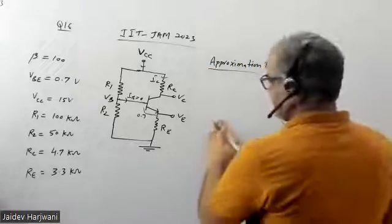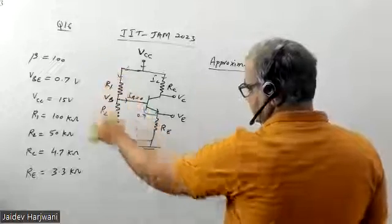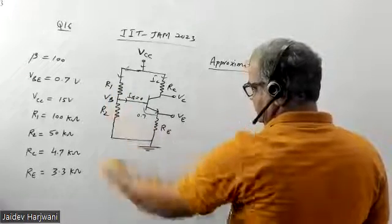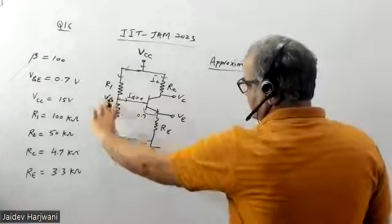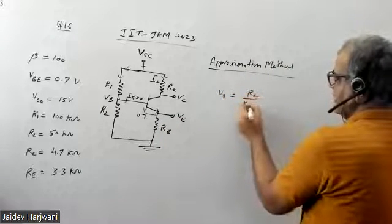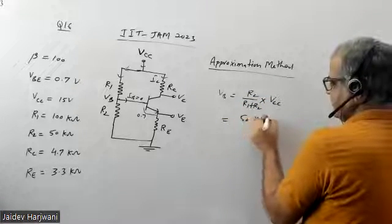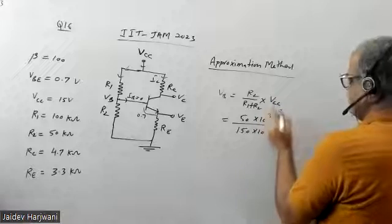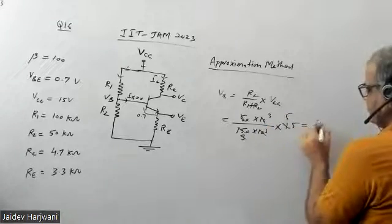I am assuming IB is negligible, so IB goes to zero. Whatever current is coming through the source, all current goes through R1 and passes directly to R2. So I can apply the voltage divider rule and find the voltage across R2, which equals VB. VB equals R2 upon (R1 plus R2) into VCC, which is 50k upon 150k into 15V, giving VB equals 5 volts.